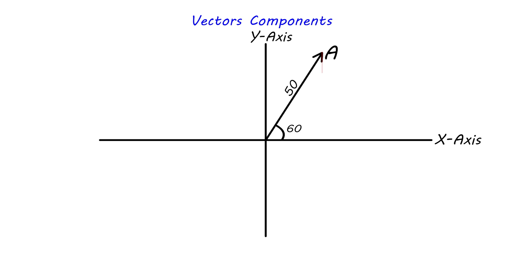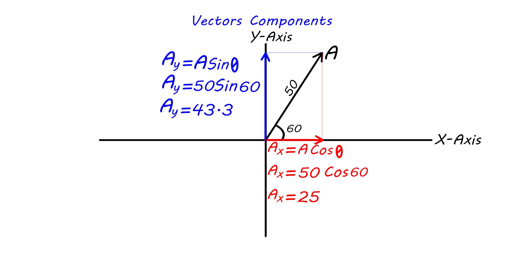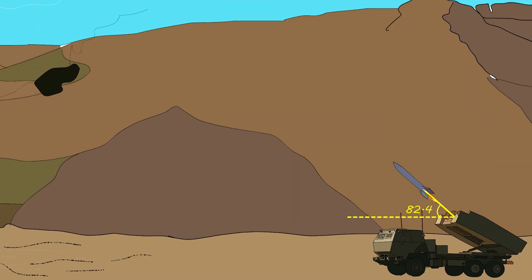The x component is Ax = A cosine theta. Substituting: Ax = 50 cosine 60 = 25. The y component is Ay = A sine theta. Substituting: Ay = 50 sine 60 = 43.3.